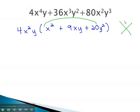a times c is 20, and we want to add to 9. We can see those numbers will be 4 and 5.